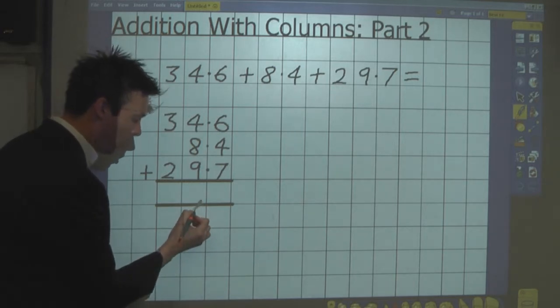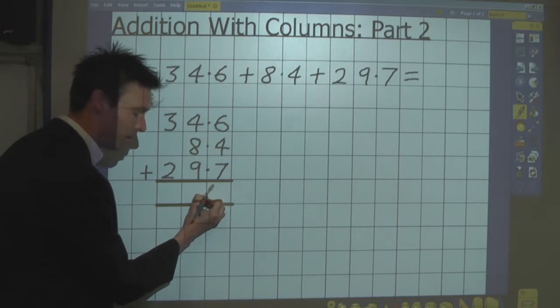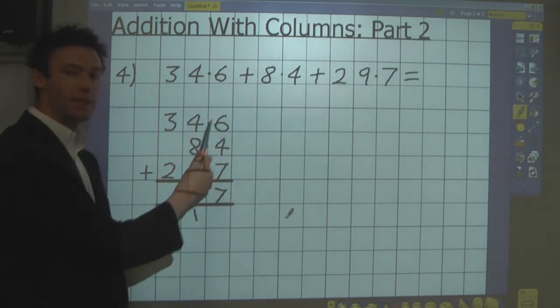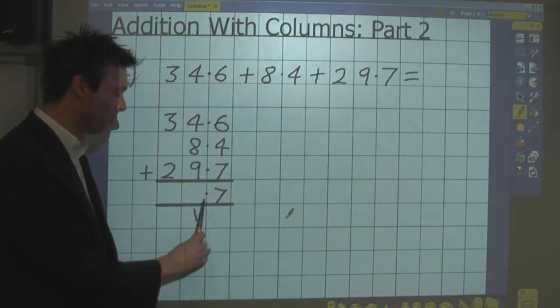So I write the one whole one in the units column where it belongs. I write the decimal place in position, and I write the number of tenths. So 6 tenths plus 4 tenths plus 7 tenths is 1.7.